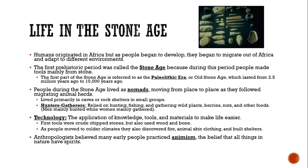The first part of the Stone Age is referred to as the Paleolithic Era, or Old Stone Age, that lasts from 2.5 million years ago to about 10,000 years ago. People during the Stone Age lived as nomads, which means they moved from place to place as they followed migrating animal herds. Many lived in caves or rock shelters, which is where we get the term cavemen from. Many of these nomads depended on hunting and gathering — hunting for fish and gathering wild plants, berries, nuts, and other foods. The men primarily hunted, while women mainly gathered.